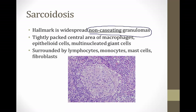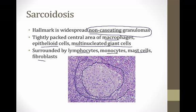What makes up these non-caseating granulomas? There's a tightly packed central area, as shown in this picture. Inside this area there are lots of macrophages and epithelioid cells, as well as multinucleated giant cells, which are special cells found in granulomas. Around the periphery are lymphocytes, monocytes, mast cells, and fibroblasts. The most important thing to notice is that there is not a lot of dead tissue in the center. If there were lots of dead tissue and no nuclei, that would be a caseating granuloma like you see in TB.